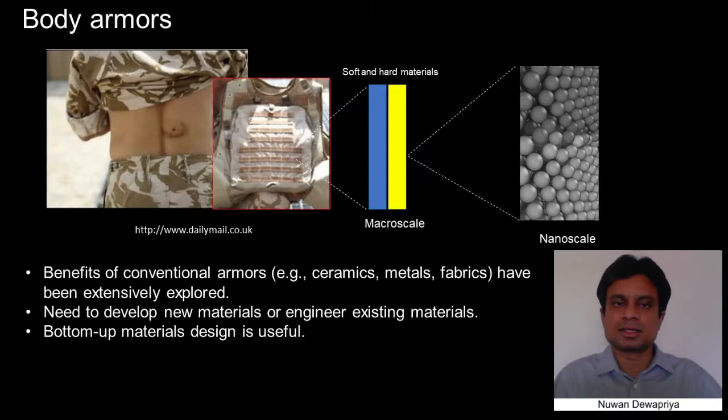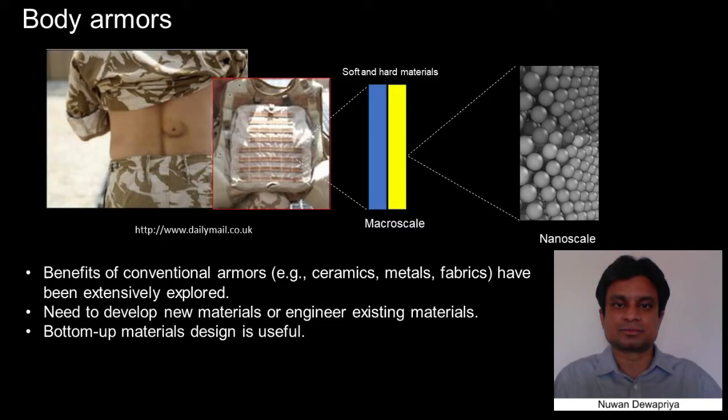It is critically important to develop materials and structures with higher impact resistance because it will save numerous lives. If we have a closer look at a body armor, we will be able to see layered soft and hard materials. If we take a powerful microscope and look inside those materials, we will be able to see atoms where the failure initiates. With the available computational tools, we can start engineering design at the nanoscale to develop barrier materials with superior impact resistance.